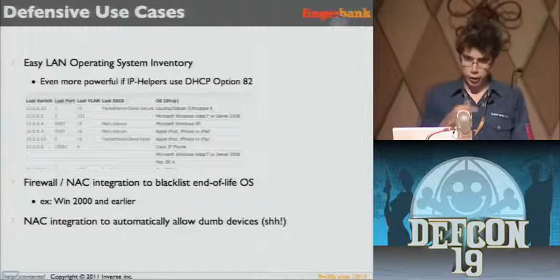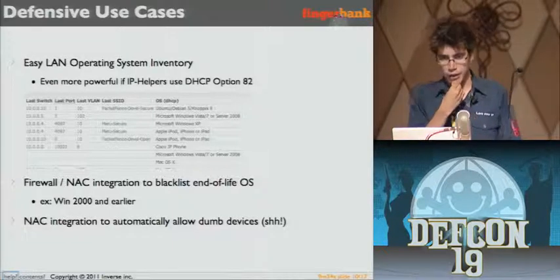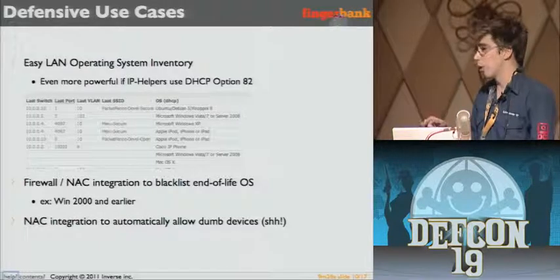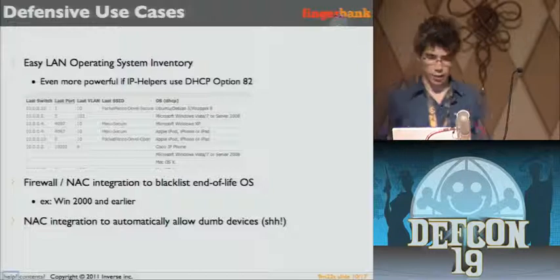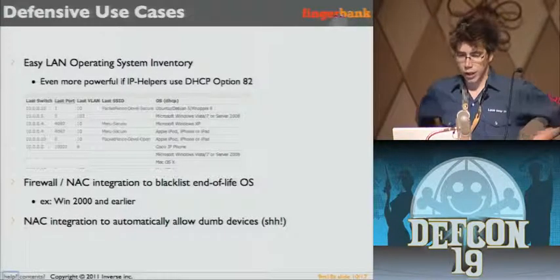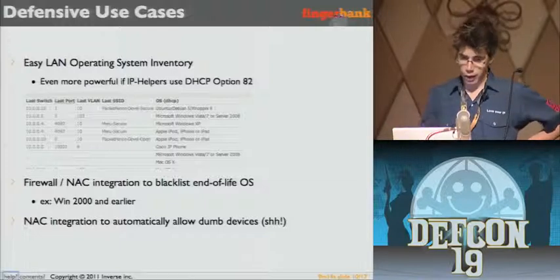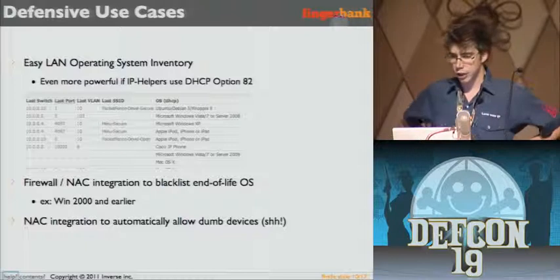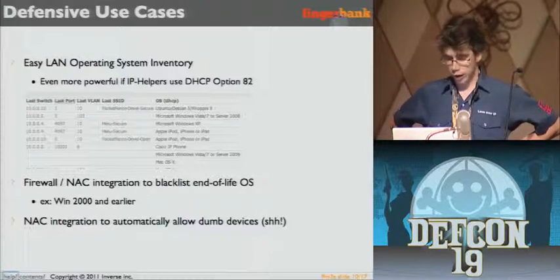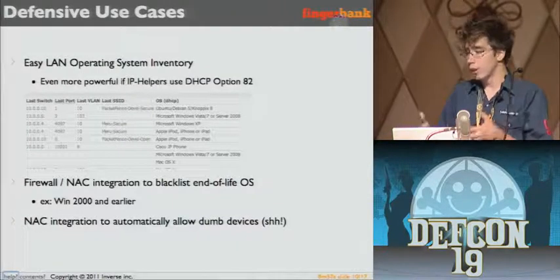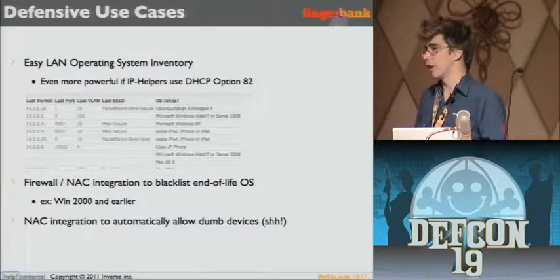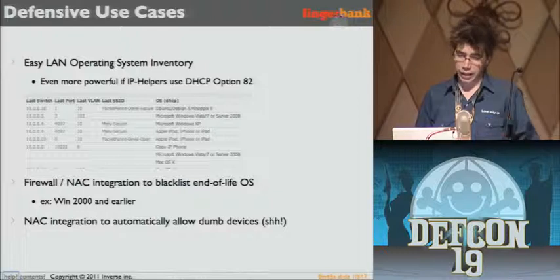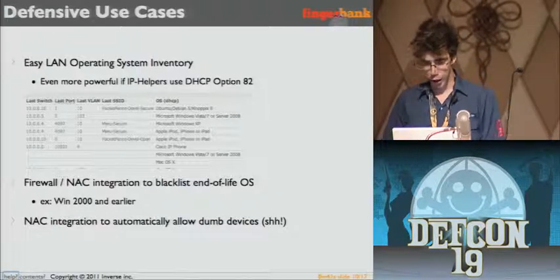Let's get into some use cases. I'm more into defensive stuff, but here we go. You can do really easily LAN operating system inventory, or flag people with Windows 95 and tell them to get something serious. Here is a screenshot of what we do with PacketFence — you see last switch, last port, last VLAN. This is possible with DHCP Option 82 implemented in Cisco switches. It's more or less reliable, but it's powerful to blend the two, because you'll know for a host where it's located and what OS it's running.